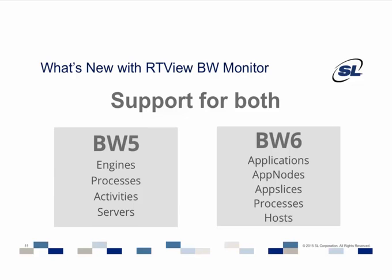Probably the most significant enhancement in this release is the support for BusinessWorks 6. We've definitely embraced how powerful BusinessWorks 6 is and how it can automate the deployment of applications over any number of servers. But if you look at the architecture, it's really almost a different application. Whereas BusinessWorks 5 has engines, activities, and servers, in BusinessWorks 6 you're looking at applications, app nodes, and app slices — a different set of metrics that have to be monitored.